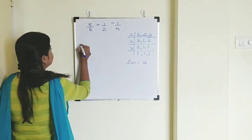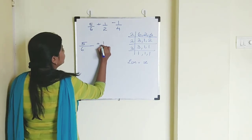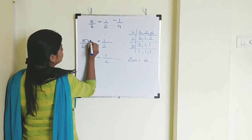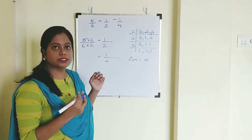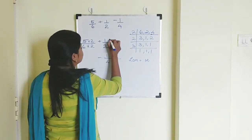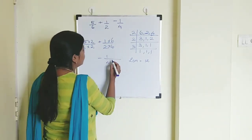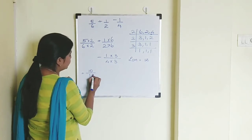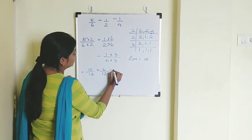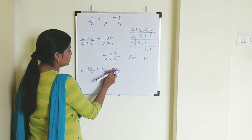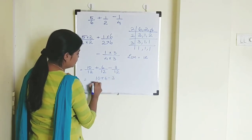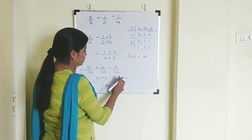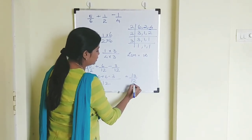Now make all denominators equal to 12. For 5 by 6: multiply 6 by 2 to get 12, so numerator also times 2 — giving 10 by 12. For 1 by 2: multiply 2 by 6, so numerator also times 6 — giving 6 by 12. For 1 by 4: multiply 4 by 3, numerator also times 3 — giving 3 by 12. So we have 10 plus 6 minus 3 by 12. Using BODMAS, do addition first: 10 plus 6 is 16, then 16 minus 3 is 13. So 13 by 12 is the answer.